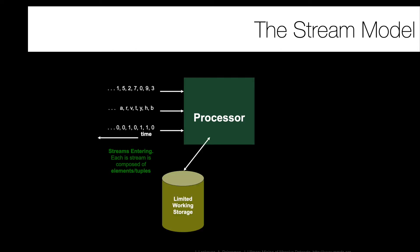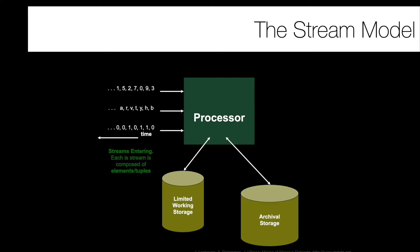Generally we think of a number of inputs coming in over time — maybe three different streams, each with tuples we want to process. We have a stream processing element with limited finite storage. Maybe we also have secondary, slower archival storage for summary or partial statistics over historical data. We want to answer queries — some pre-specified or standing queries — using our archival storage and finite memory. The output might be the most common item, or from the firewall example, the average bytes per IP address, useful for denial-of-service detection or anomaly detection.